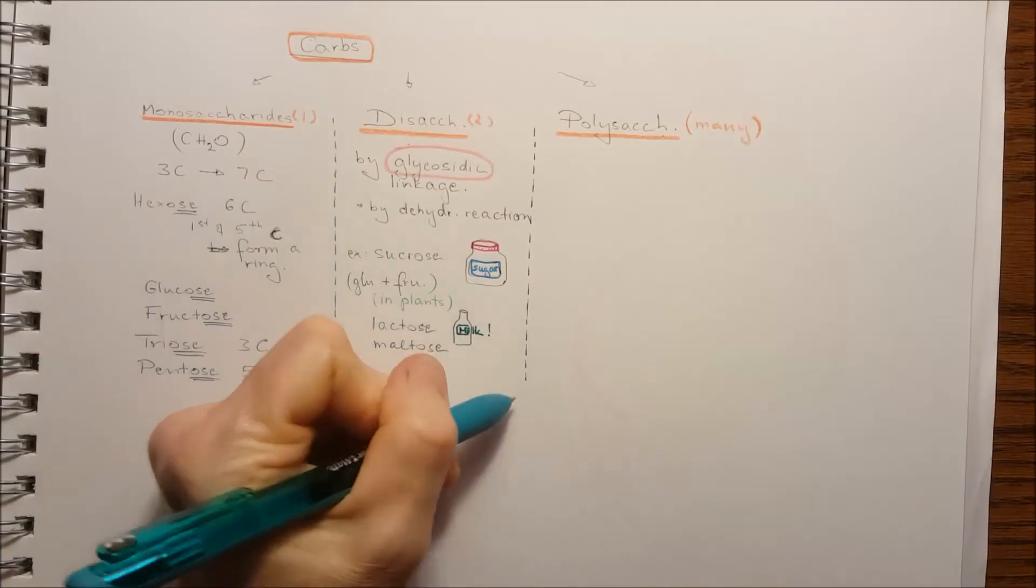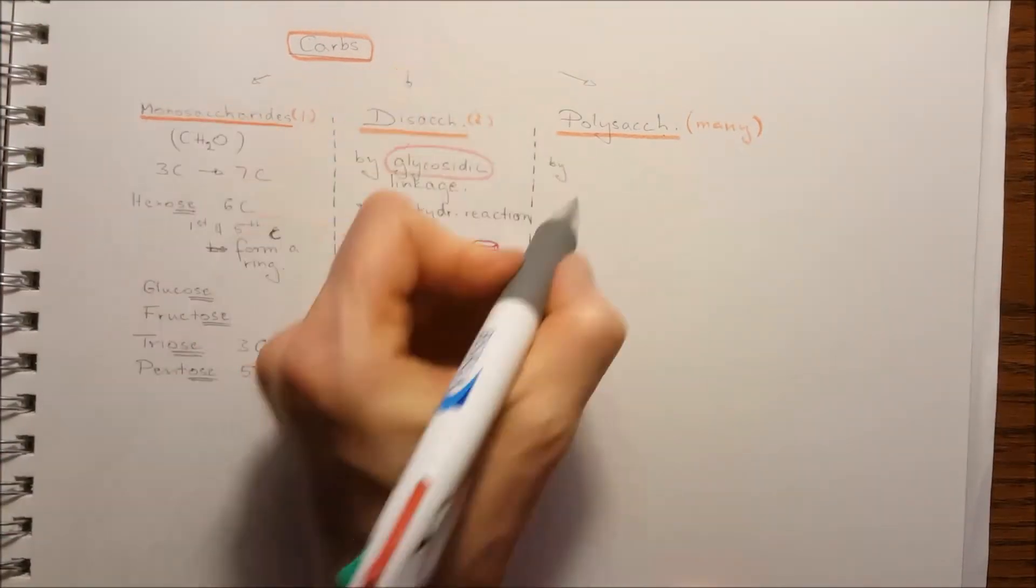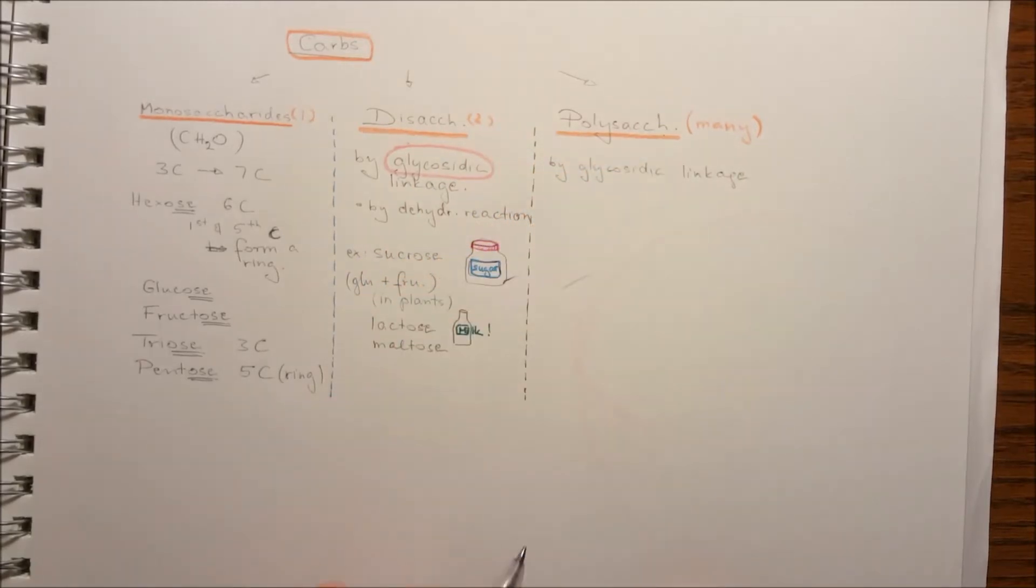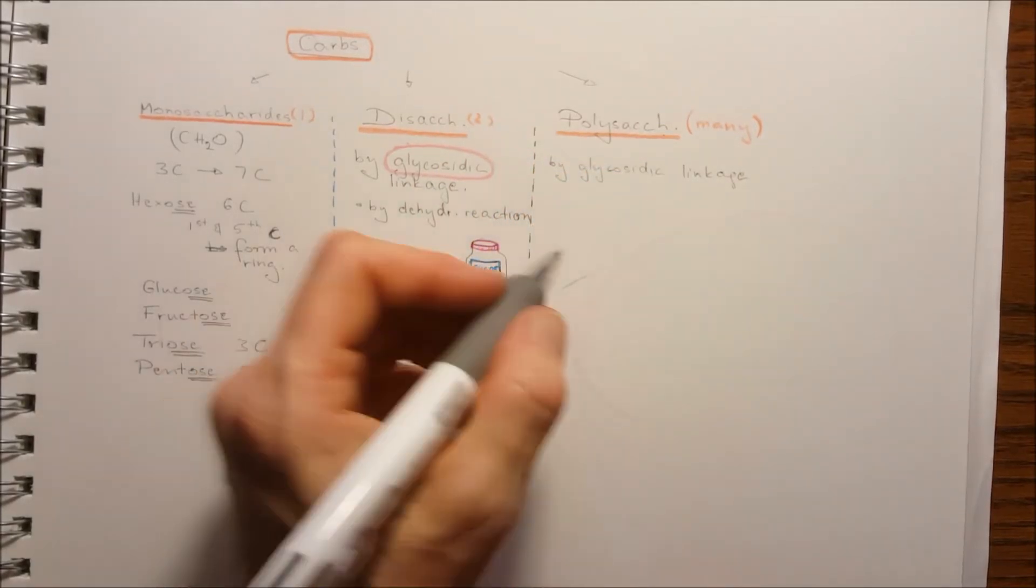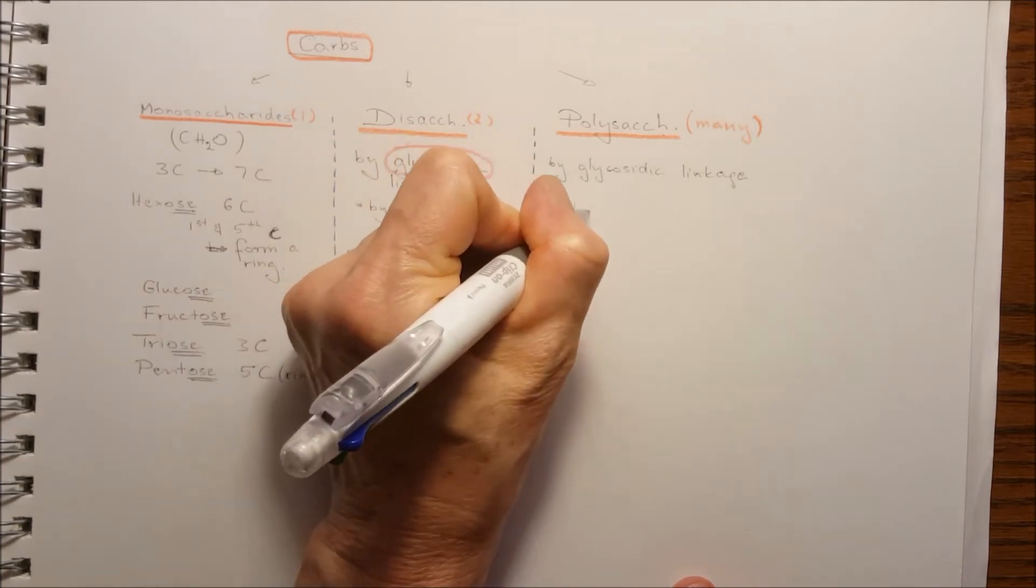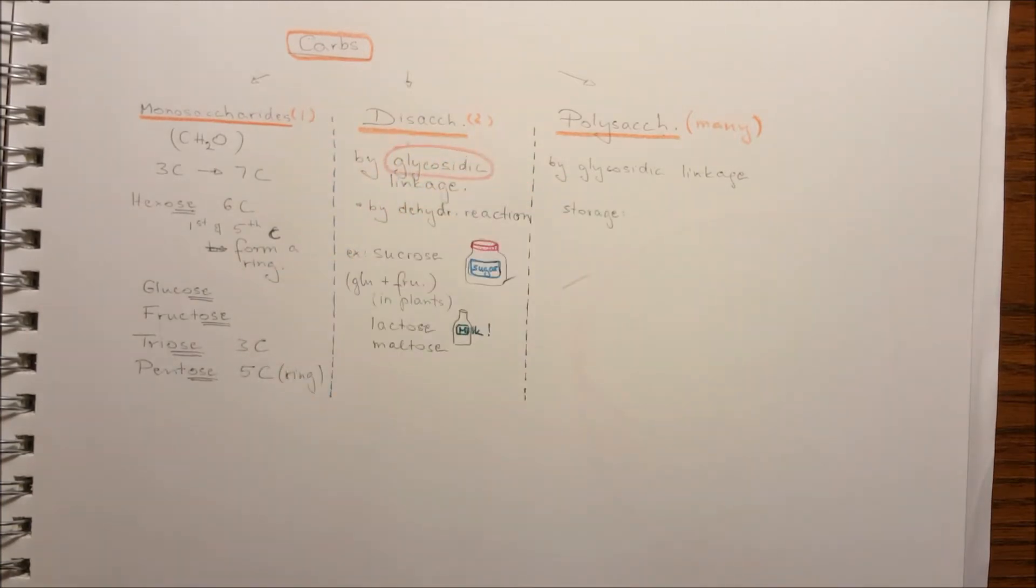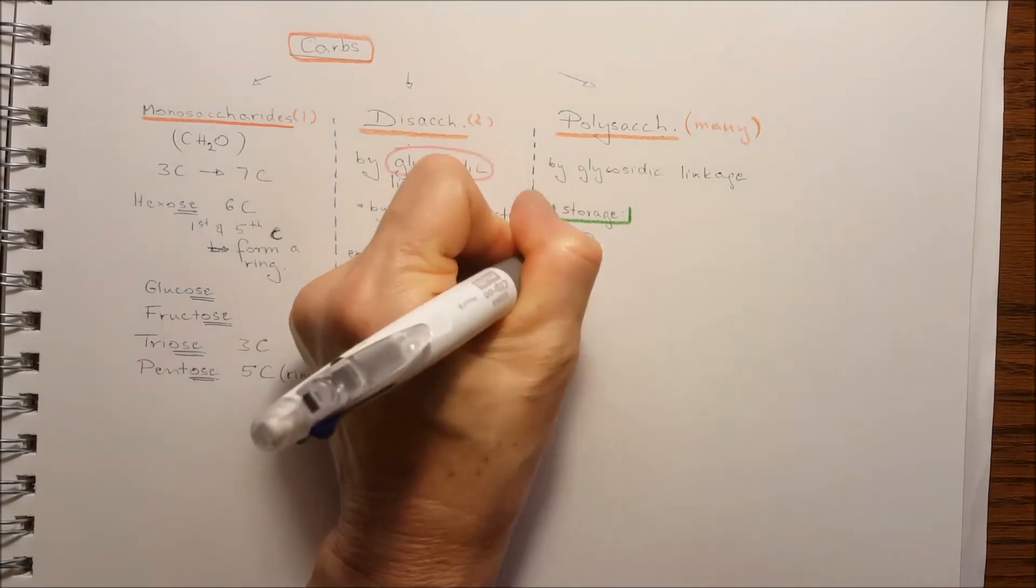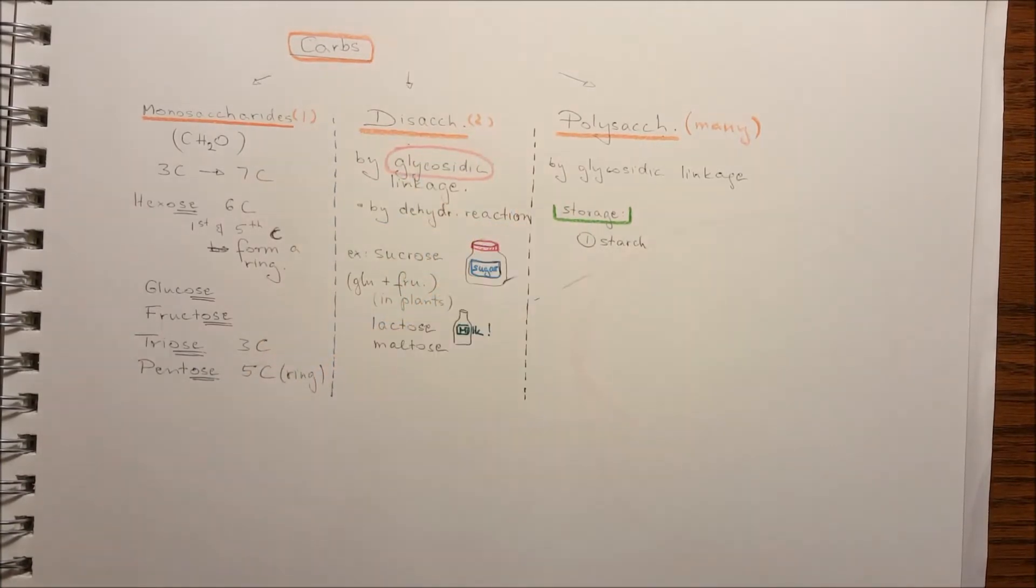So the polysaccharides, it's also by glycosidic linkage binding together through dehydration reaction. The polysaccharides can function as a storage, like the starch and glycogen.